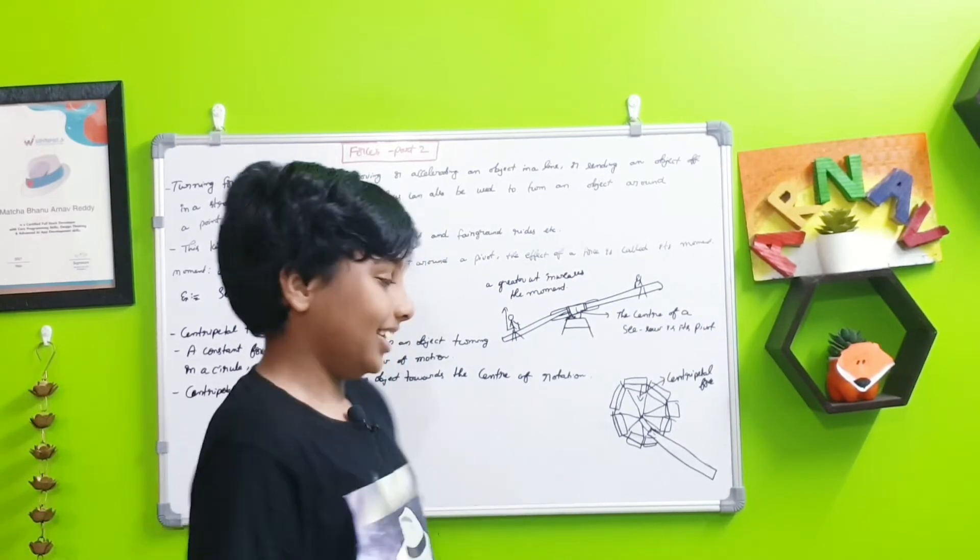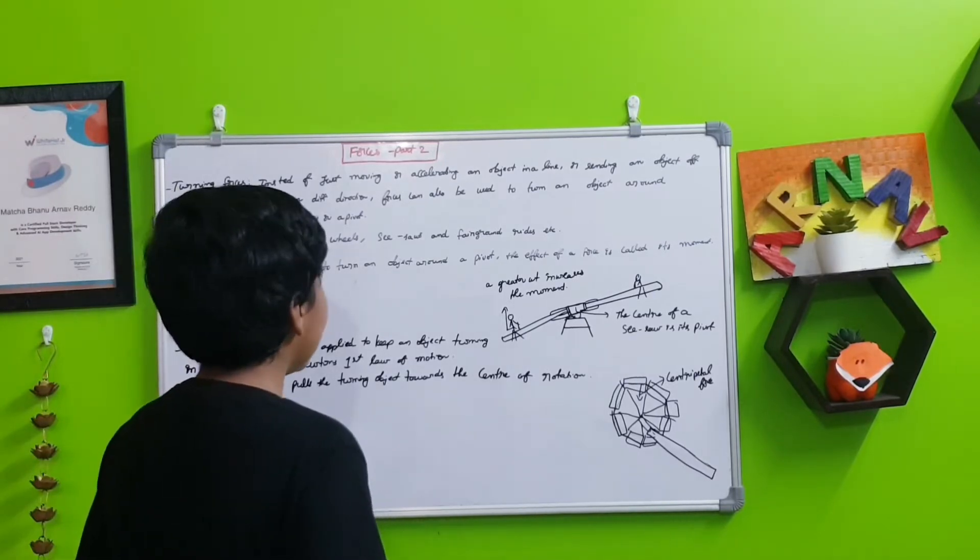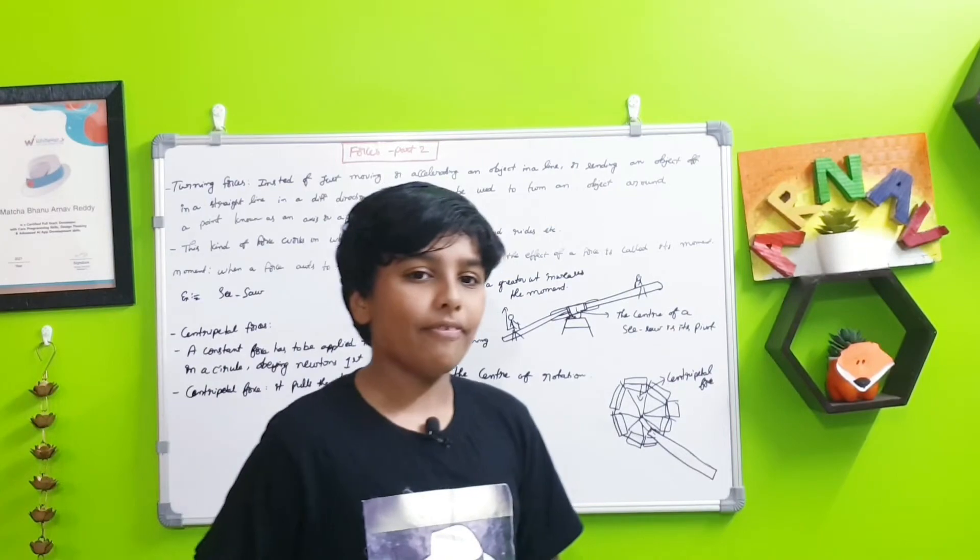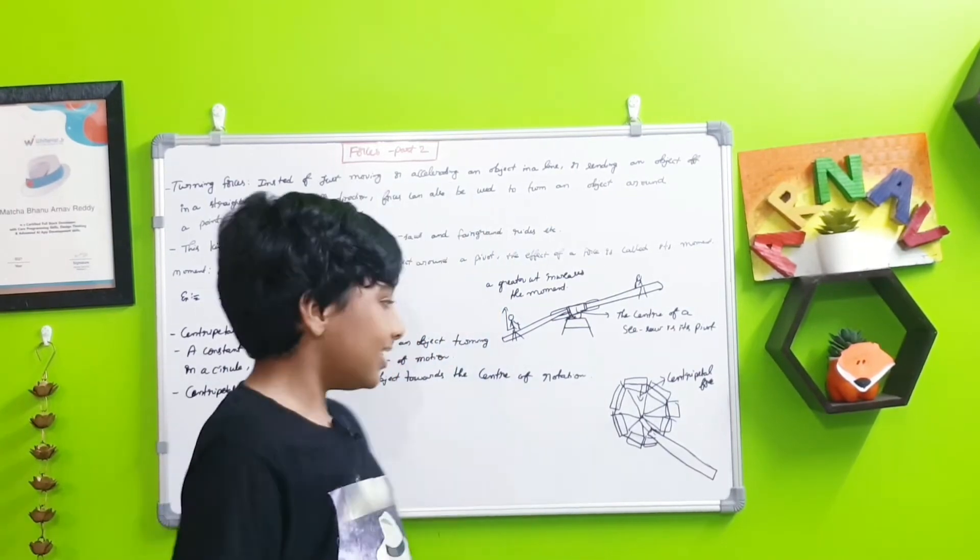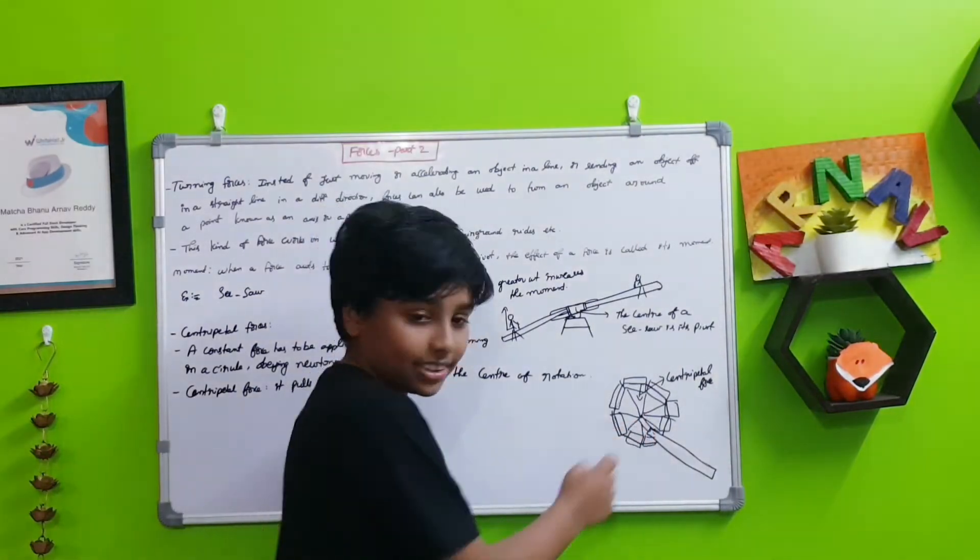The centripetal force pulls the turning object towards the center of rotation. As I said before, an example is the ride. This is a very big ride here, so in the middle here is the point of the axis.